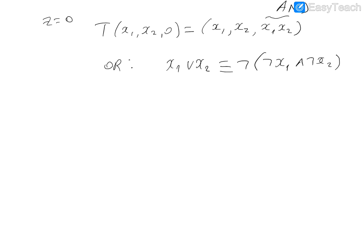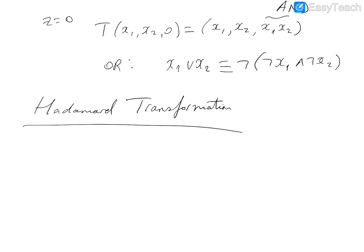However, CNOT and Toffoli gates are really classical gates — they are not quantum exclusive. We can still use them in quantum computation because they are reversible, but there is one important exclusive gate for quantum computation, and one of these exclusive gates is called the Hadamard transformation.